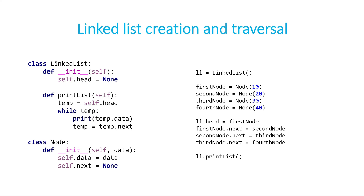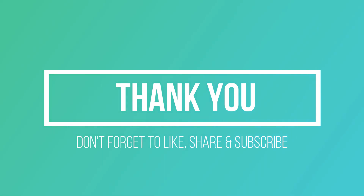In summary, we created class LinkedList and class Node, created a linked list with four nodes, linked them to each other to form a linked list, and finally did the traversal using print_list. On the left side you can see the class definitions including print_list, and on the right side how we used them. The very last line, ll.print_list(), would output 10, 20, 30, and 40. You can check the description box to get the code. Thank you so much for tuning into LogicHeap — if you liked this video, please like, share, and subscribe.